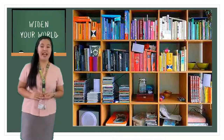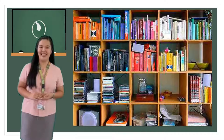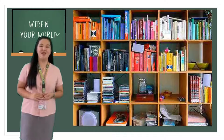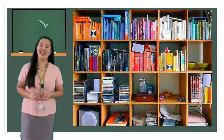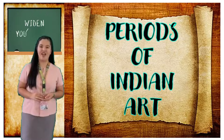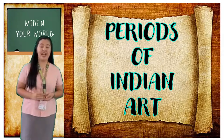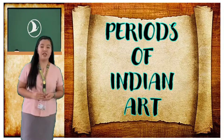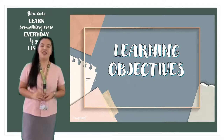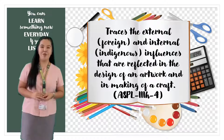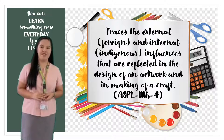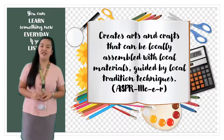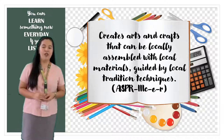The activity you have done has something to do with our lesson for today. The different images presented are examples of art in the different periods of Indian art. Our lesson for today is about the periods of Indian art. The objectives of this lesson are: first, to trace the external and internal influences reflected in the design of an artwork and in the making of a craft; and second, to create arts and crafts that can be locally assembled with local materials guided by local tradition and techniques.